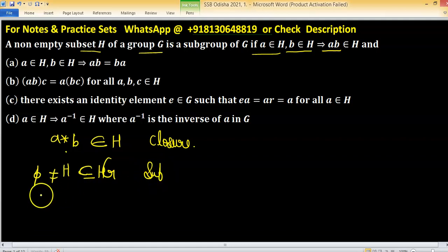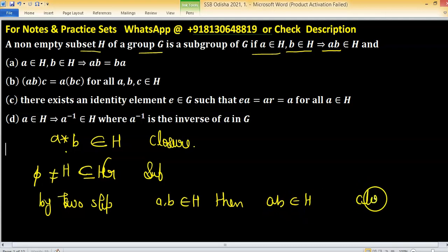If by two-step test, the two-step test says if A, B belongs to H, then AB belongs to H. This property sometimes we say closure property. And if A belongs to H, then their inverse also belongs to H. This property is known as closure property.